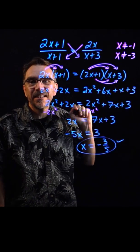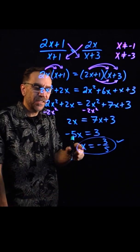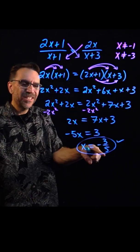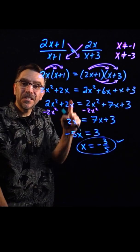Now we want to check to make sure that's not in the list of restrictions. It's not, so that answer should solve the original. And so there we go, we solved the rational equation.